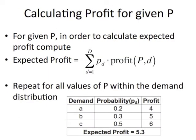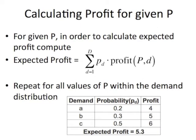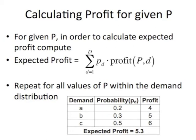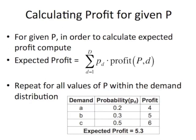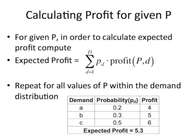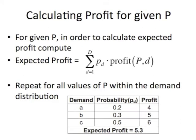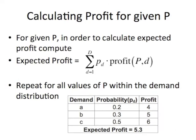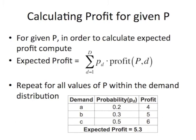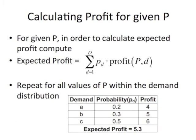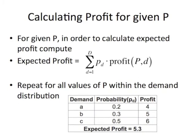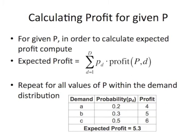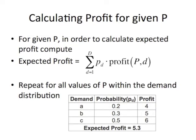Calculating the expected profit requires several steps. For each demand, multiply the probability of that demand occurring by the profit at that demand, then sum all of these results together. A simple example: the probability of demand A is 20% with a profit of 4; demand B is 30% with a profit of 5; demand C is 50% with a profit of 6. So you take 0.2 × 4 + 0.3 × 5 + 0.5 × 6, which gives an expected profit of 5.3.